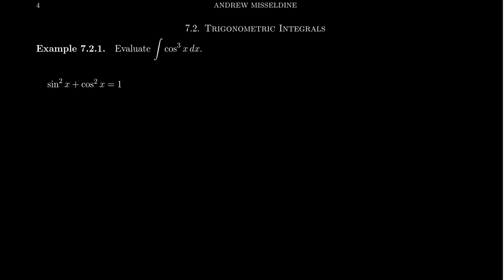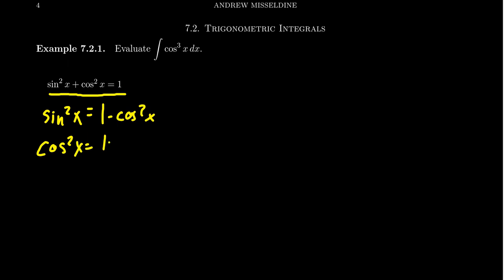In this first video, we're going to look at examples involving only sines and cosines. When we only have sines and cosines, our good friend is going to be the Pythagorean identity: sine squared plus cosine squared equals one. If you solve for sine squared, you get sine squared equals one minus cosine squared. And likewise, cosine squared x equals one minus sine squared x.